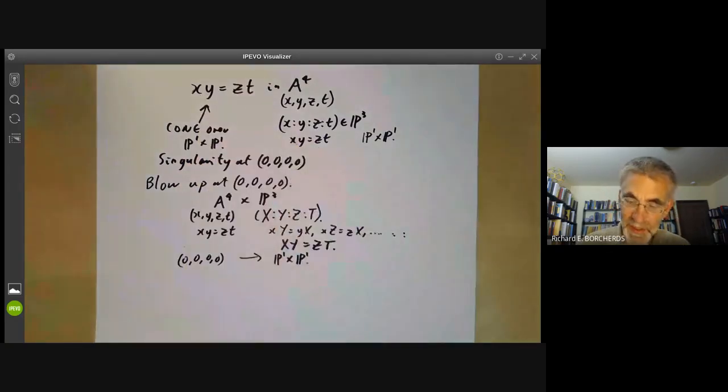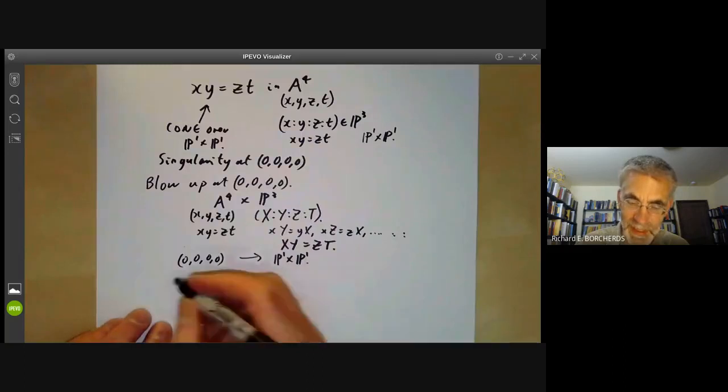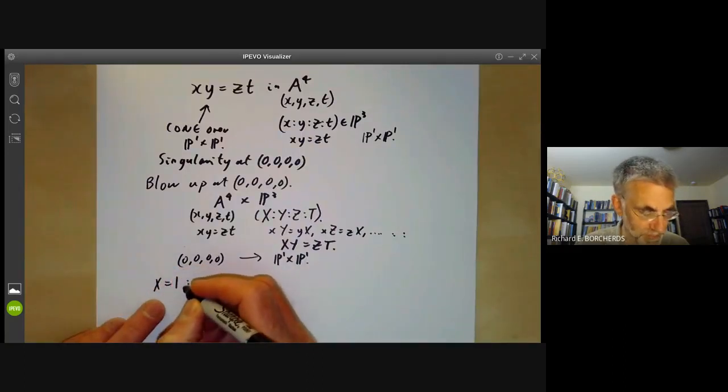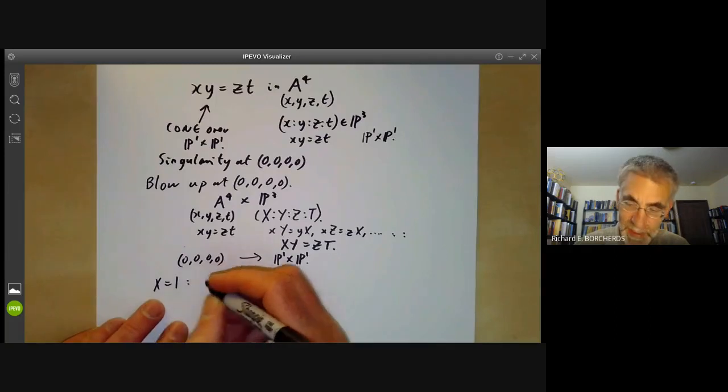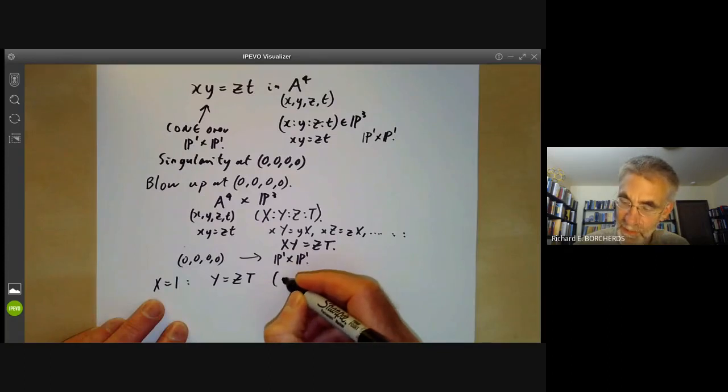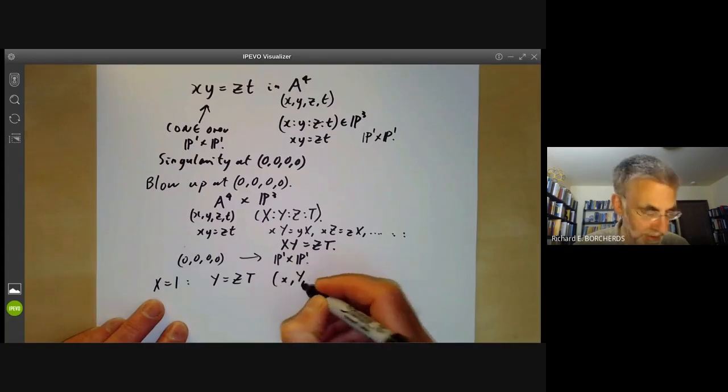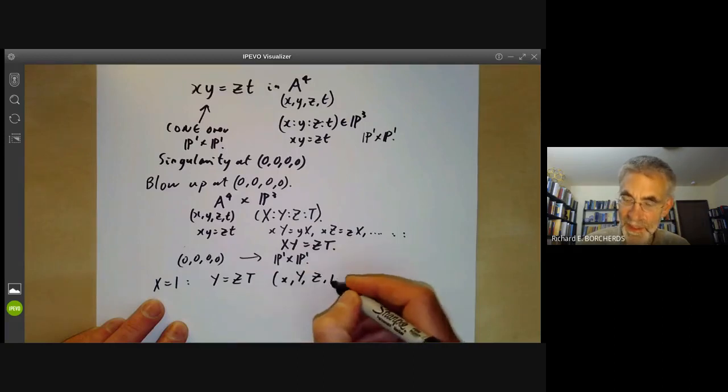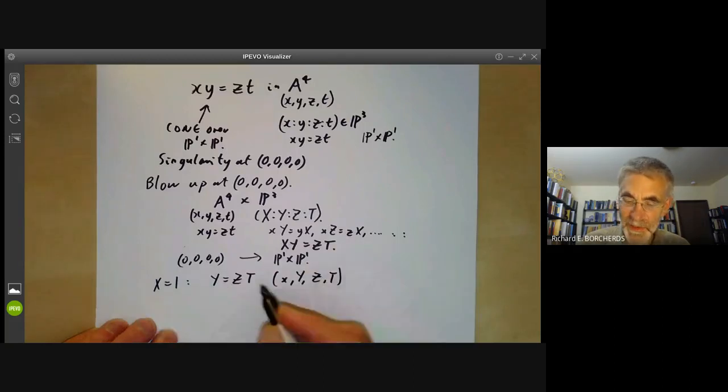The singular point of this variety has now been blown up. We can check that this blow-up is non-singular because along, say, X = 1, it becomes Y = ZT. Here the coordinates are little x, big Y, big Z, and big T, and this is obviously a non-singular variety. So this resolves the singularity.